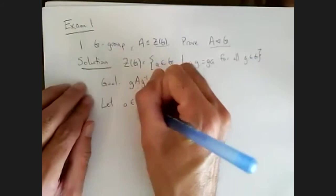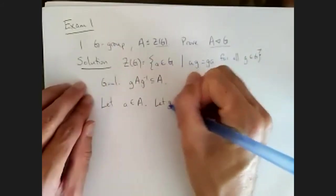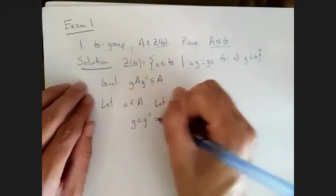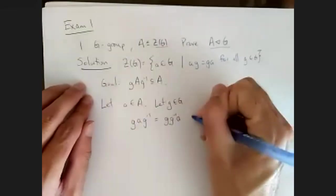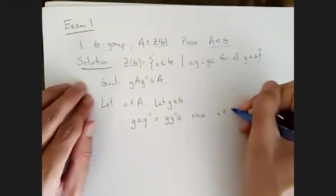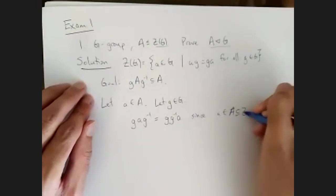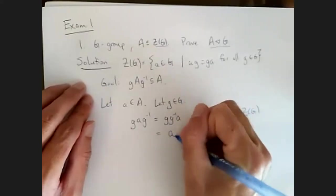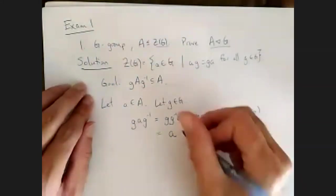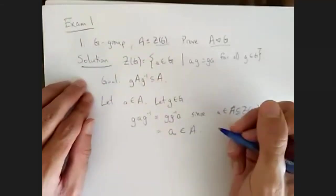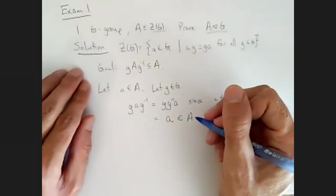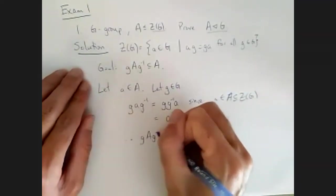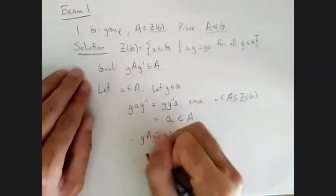So let a ∈ A and g ∈ G. Now we look at gag⁻¹. That's just gg⁻¹a, since a is in the center. And gg⁻¹ is just the identity. Identity times a is just a. And a is an element of A. This shows that gAg⁻¹ is a subset of A, which shows that A is normal.